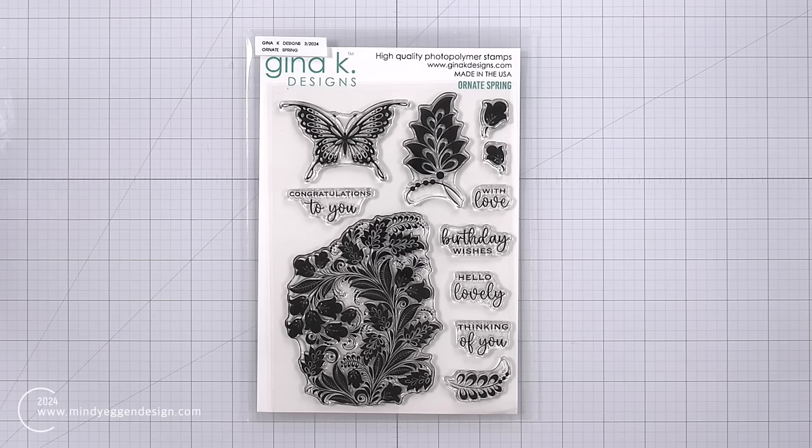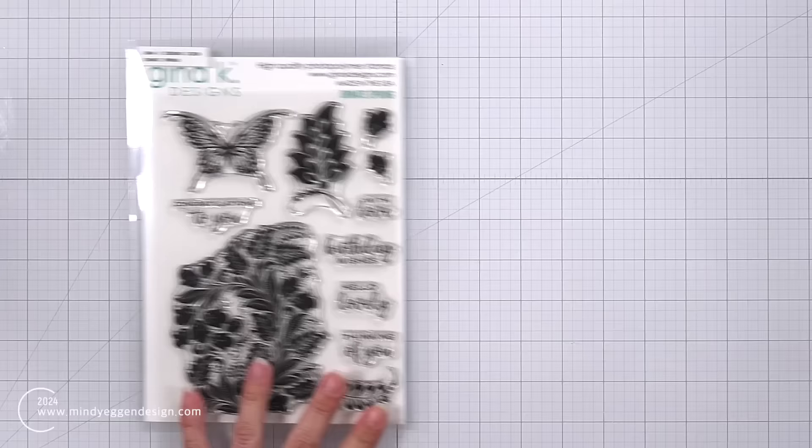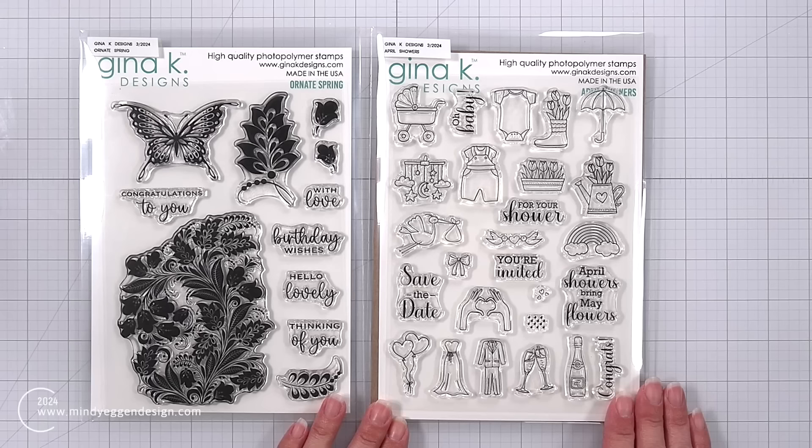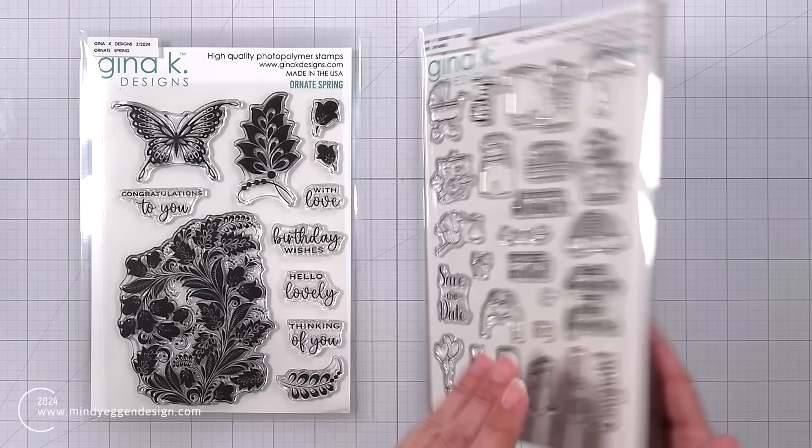Now I'm moving into some of the products from the kit. So this is the ornate spring. Absolutely gorgeous silhouette images. I'm definitely using that butterfly and then we also have another stamp set and this one is called April showers. Tons of really great celebratory images and they also fit inside of those postage dies too. So you could decorate your postage dies with any of those images.